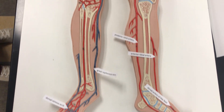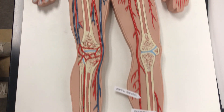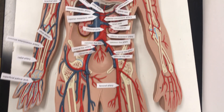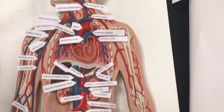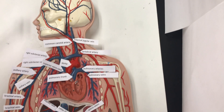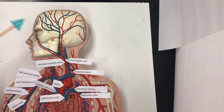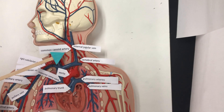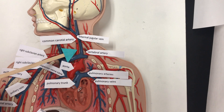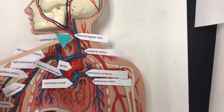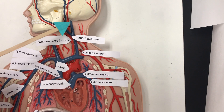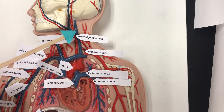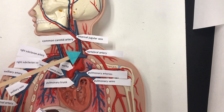This is a tour of the major blood vessels of the body. We're going to start at the superior end. This is the head. The common carotid artery takes blood to the head, and the internal jugular vein takes blood away from the head.